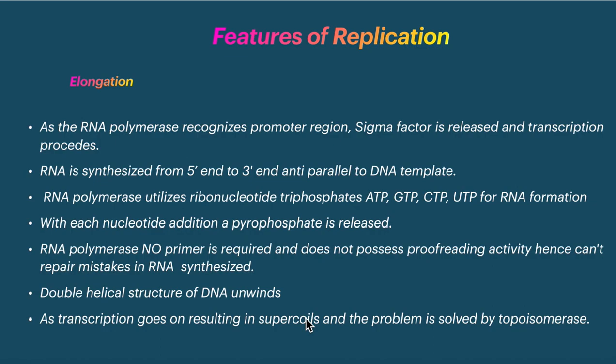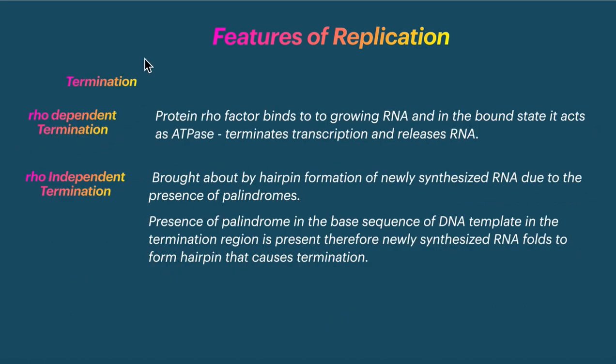During elongation, the DNA double helical structure unwinds, just like in replication. Supercoiling problems arise, and these are solved by topoisomerase — same as in DNA replication. After elongation comes termination.